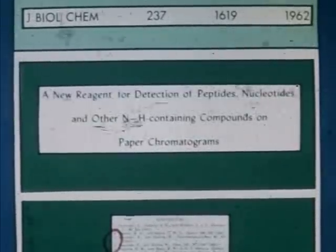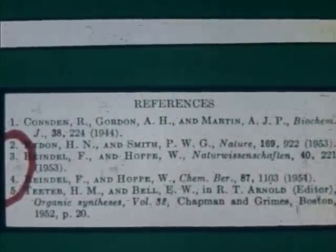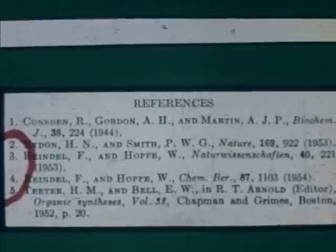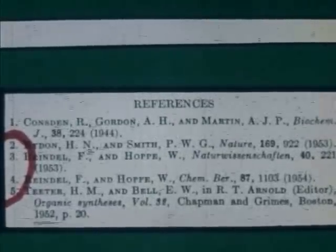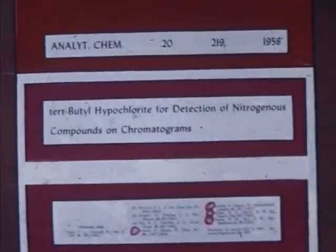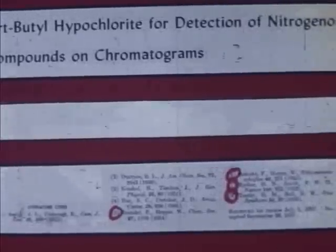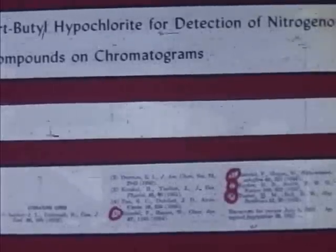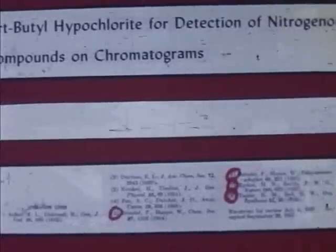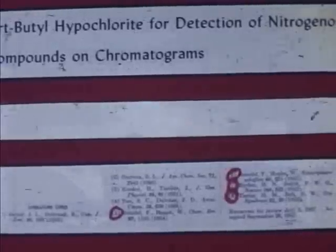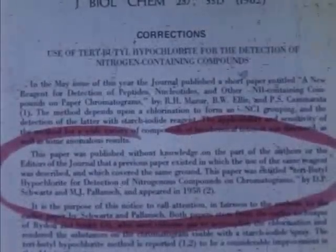On the last page, five references were cited by the authors of this paper. I've circled the four key references. If the SEI had been available at that time, any clerk could have determined that this paper from Analytical Chemistry had been published in 1958. Of the eight papers cited, I've also circled the four papers later cited in the 1962 paper. This paper was a complete anticipation of the 1962 JBC work, as acknowledged in a correction note also published in the 1962 JBC. In the correction note, the authors state that their work was published without knowledge on their part, or on the part of the editors, that the previous paper existed.